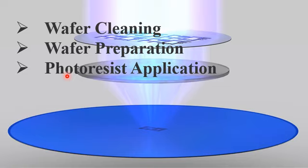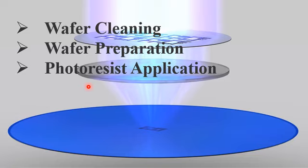The spinning time and spinning rate both play a very important role in getting thicker or thinner photoresist on the surface of the substrate. If the spinning rate is higher, you will get ultra-thin or thin photoresist on the surface. However, if the spinning rate is less, you will get thicker photoresist on the surface.